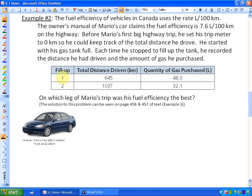So when he filled up the first time he drove 645 kilometers and he had purchased 48 liters. I'm going to do this entire one in green. The next time on fill-up two, his odometer now said 1037 kilometers and he had to purchase 32.1 liters.